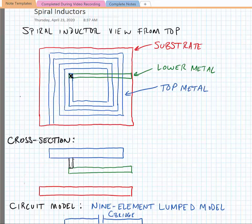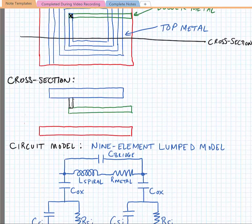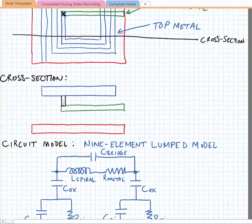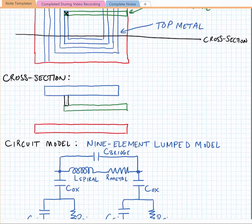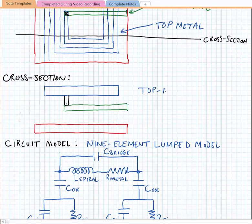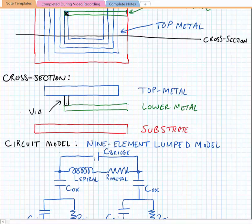If we dissect the inductor and look at a cross section, we can see what it looks like in the z dimension. And in our cross section, we have again our top metal. We have some lower metal where the crossover is. We have our substrate. And we might have a via to connect the metals. And of course, as you would expect, we have resistance and inductance in the substrate.